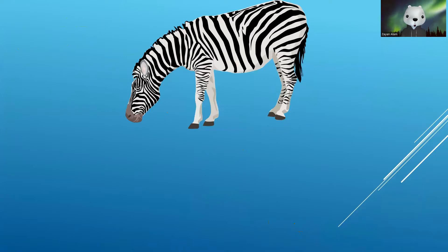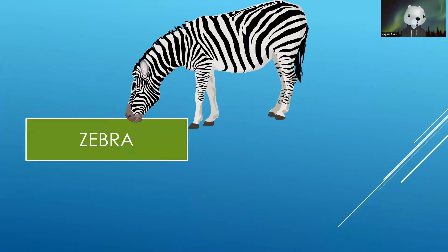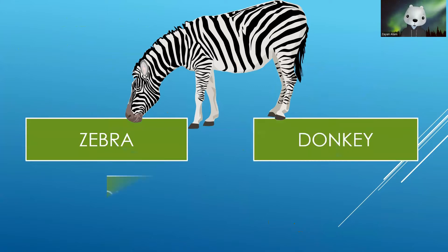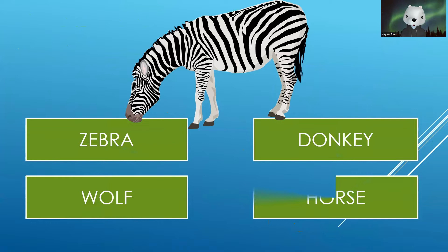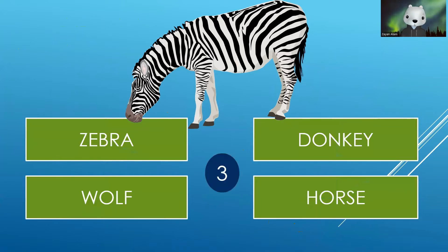Now identify this animal. Your options are Zebra, Donkey, Wolf and Horse. Your time starts now. The correct answer is Zebra.